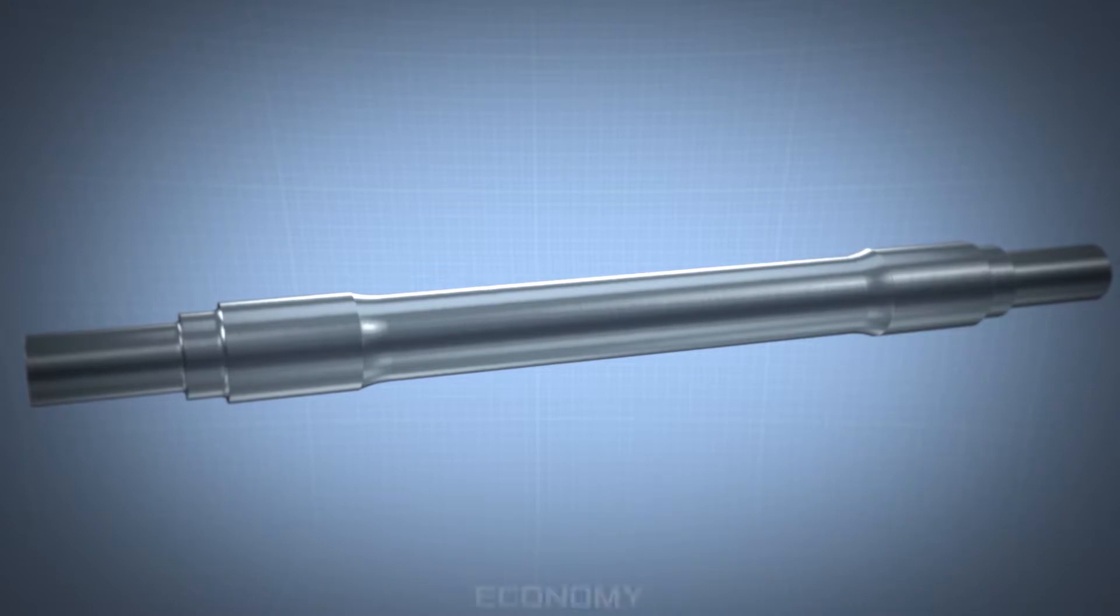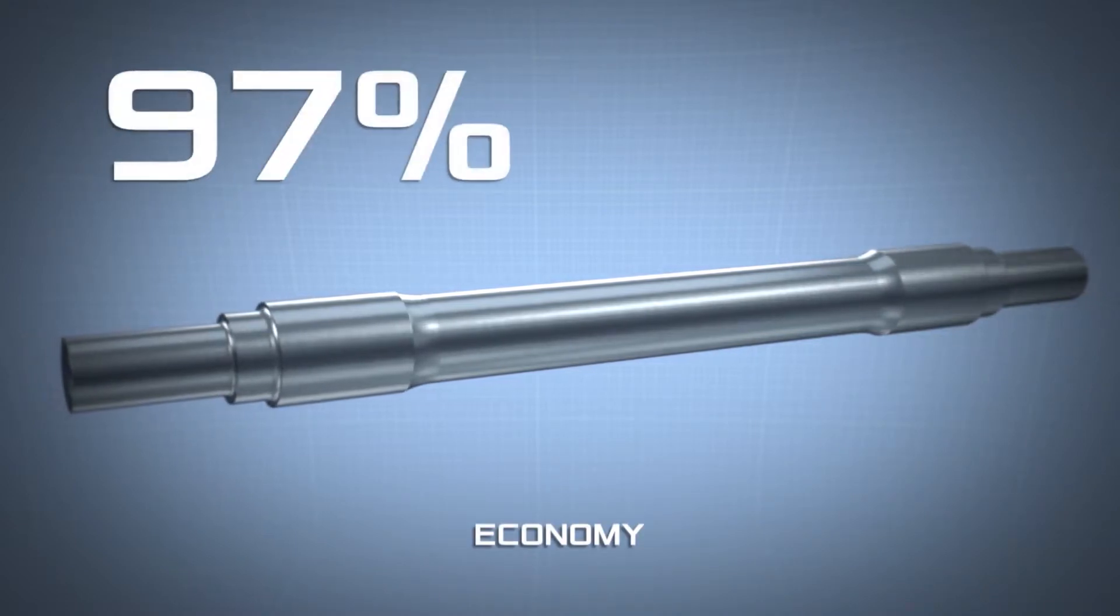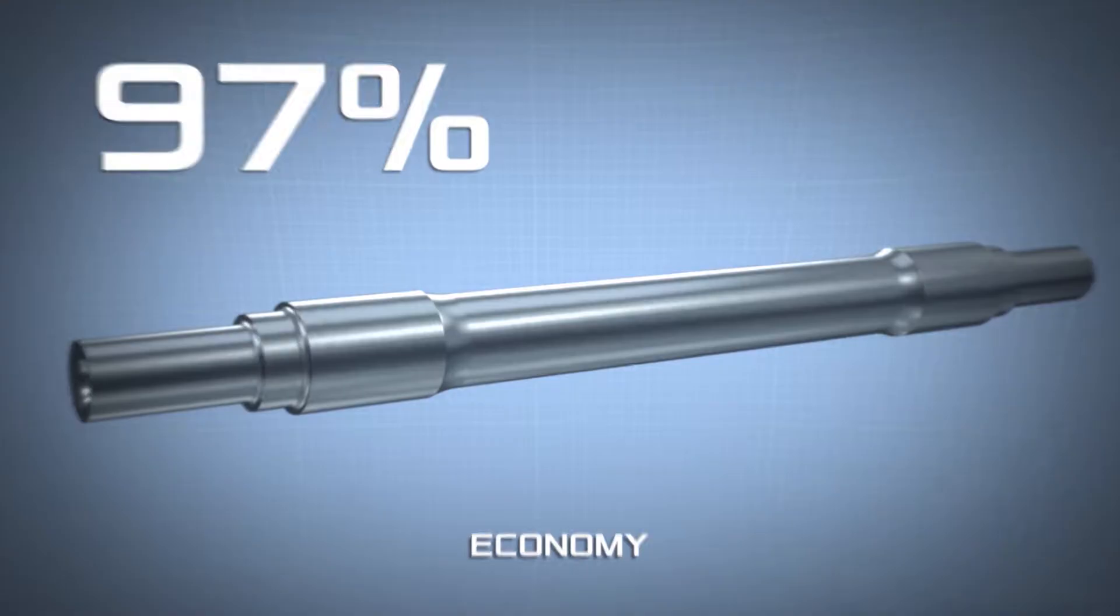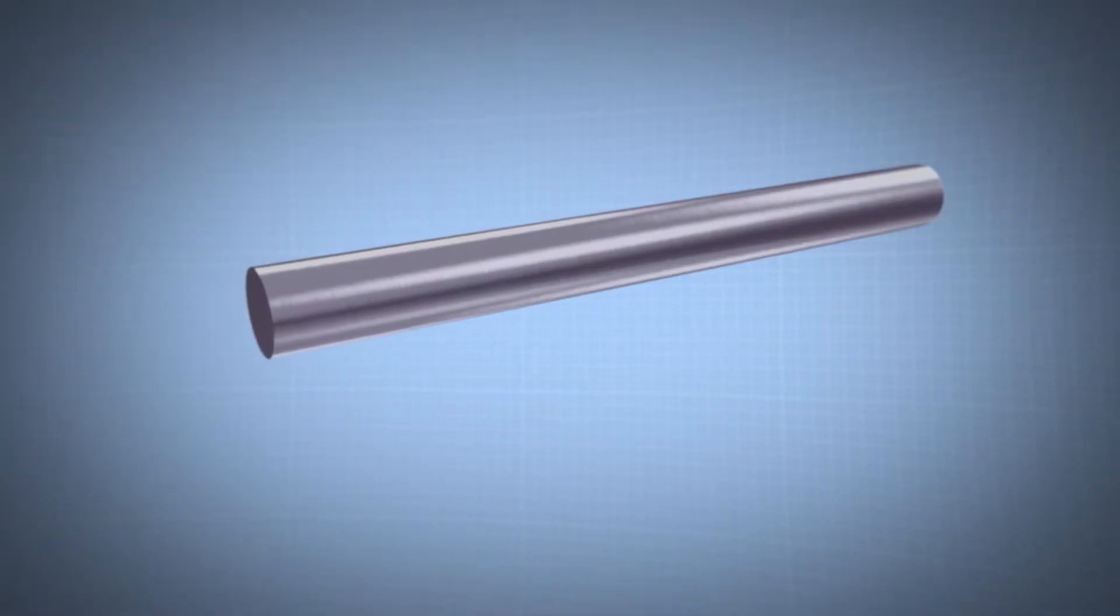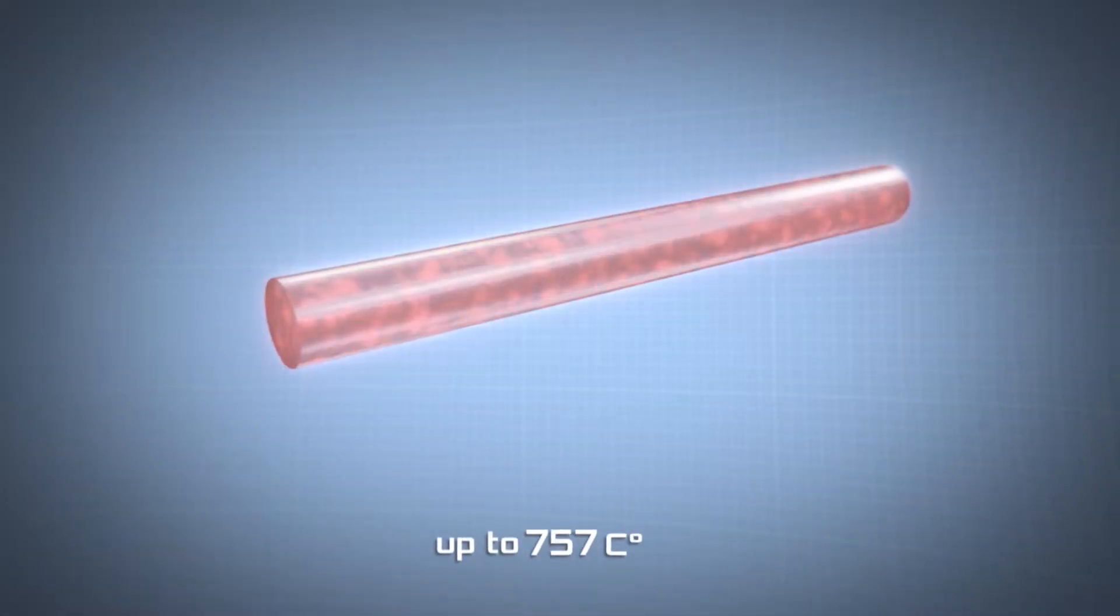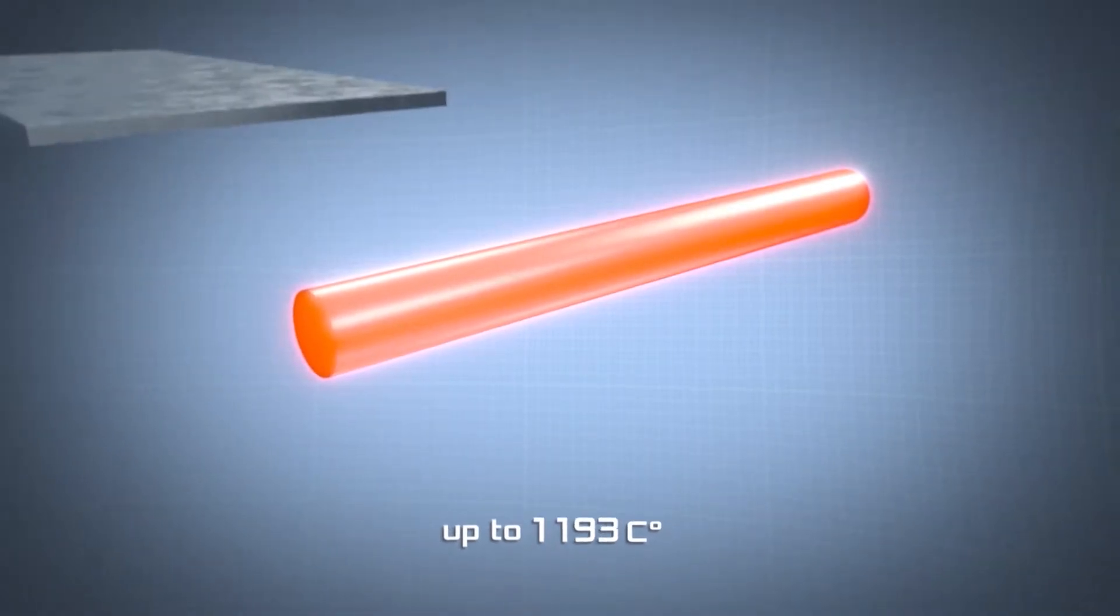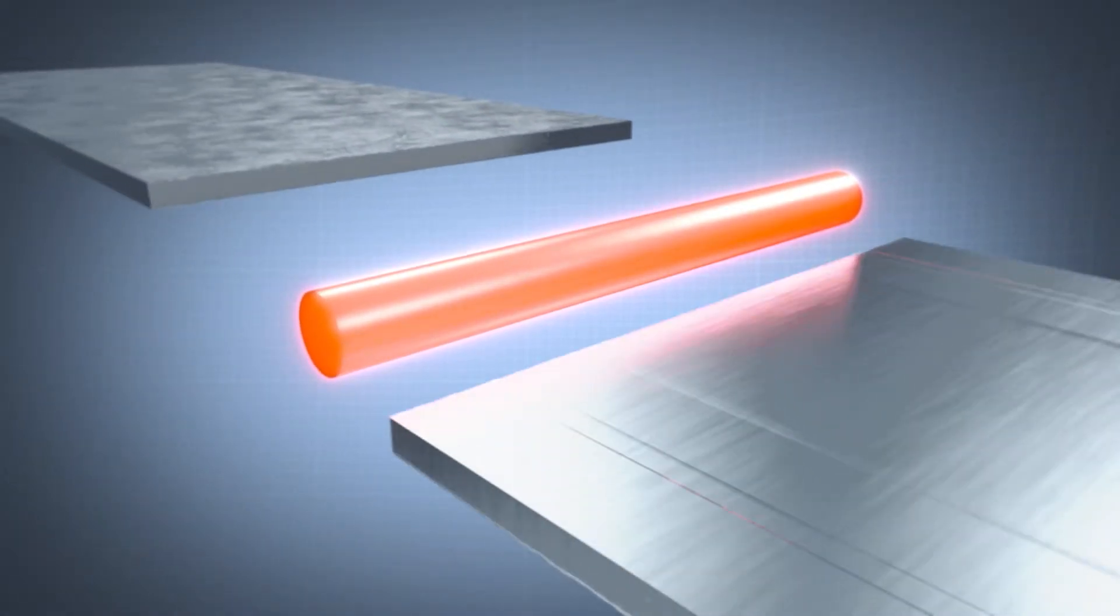At the same time, the material utilization coefficient reaches 97 percent. Cross wedge rolling is carried out the following way: the blank of steel or non-ferrous metals is heated up to the necessary temperature and becomes plastic.